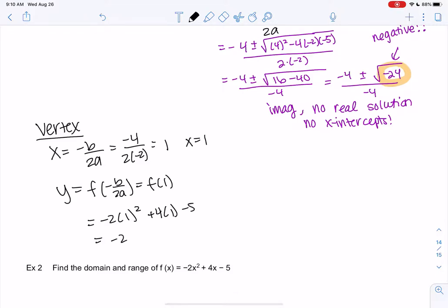So negative 2 plus 4 minus 5. I think I get negative 3. So 1 negative 3 is my vertex.